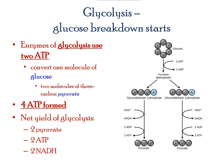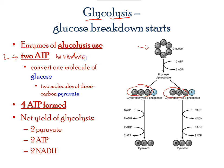Glycolysis refers to the breakdown of the six-carbon glucose molecule into two three-carbon molecules. The process requires some energy — think of investing in a business where you require some seed money. Similarly, two ATP molecules are required to initiate the entire process, with a larger number of ATP molecules released by the end of cellular respiration.